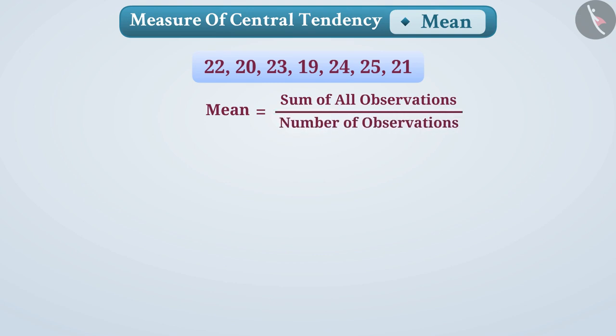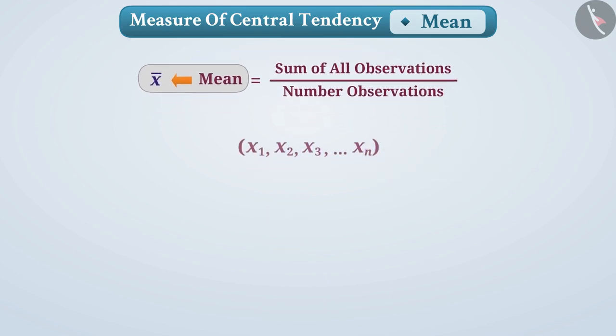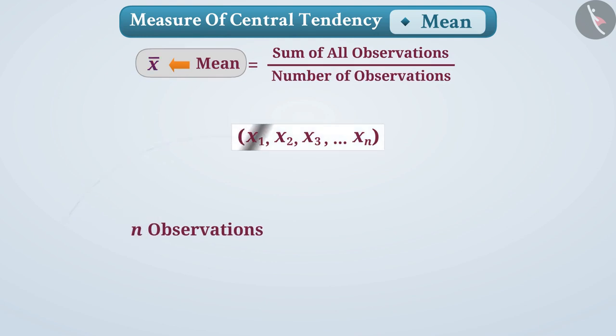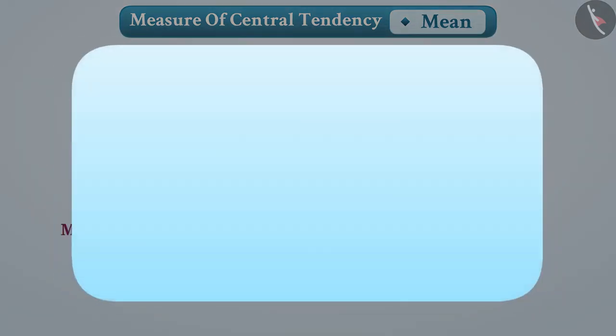For example, the mean of given data is 22. We represent mean as x bar and read it as x bar. If we are given n observations like this, then their mean can be written as shown. For our convenience, we can represent the sum of observations in this way.